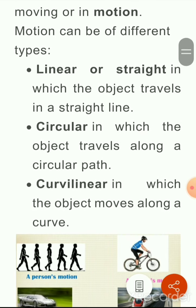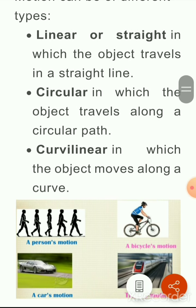Motion can be of different types — three types are shown here. Linear or Straight: जब कोई object straight line में travel करता है, that is called linear motion. Circular motion: when an object travels along a circular path, गोल गोल circular रास्ते पे, that is called circular motion. Curvilinear motion: when the object moves along a curve path, जब कोई object curve path पर move करता है, उसको curvilinear motion कहेंगे।